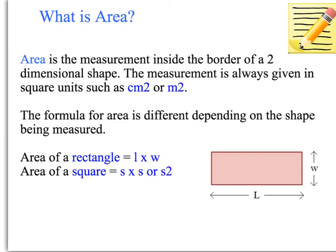Today's topic is areas and rectangles, which is 11.4 in our textbook. When we're talking about area, we mean the measurement inside the border of a two-dimensional shape, and this measurement is always given in square units — so centimetres squared, metres squared, or kilometres squared. It must be in square units; a common mistake is to forget writing the square units.